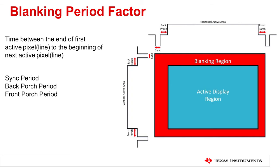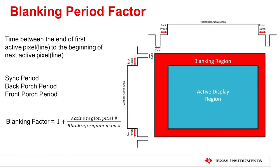Horizontal and vertical directions have their own blanking period. In calculation, blanking period is typically represented as a factor or percentage. It is equal to the number of pixels in the active region divided by the number of pixels in the blanking region. A good rule of thumb for estimating the blanking period is to assume at least 10% blanking.